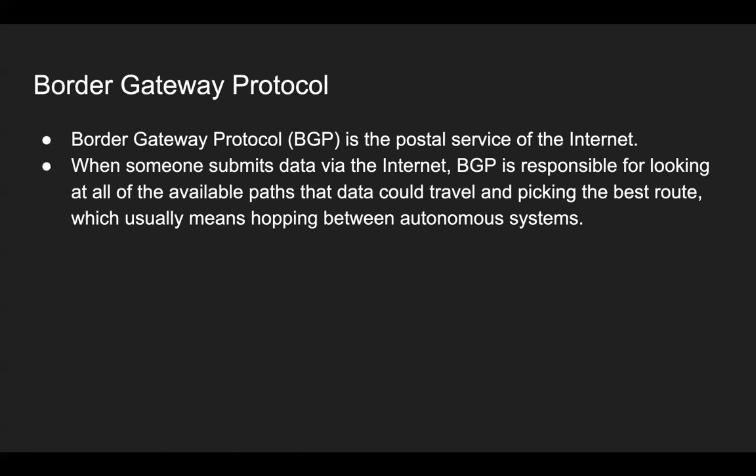When someone submits any data via the internet, BGP is the protocol responsible for looking at all of the available paths that the data could travel, picking the best route — which usually means hopping between autonomous systems using external border gateway protocol, and within an autonomous system, internal border gateway protocol. This is the basic concept for understanding a site-to-site VPN connection, because you are establishing a connection between your AWS VPC and your on-premise data center, where both are in totally different networks, probably in different autonomous systems.